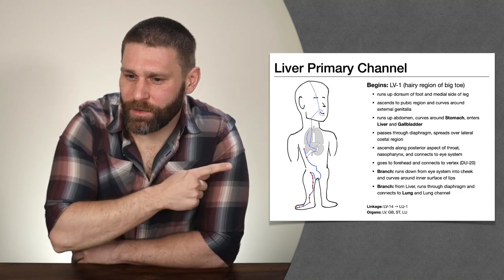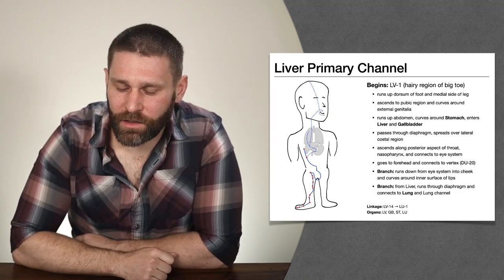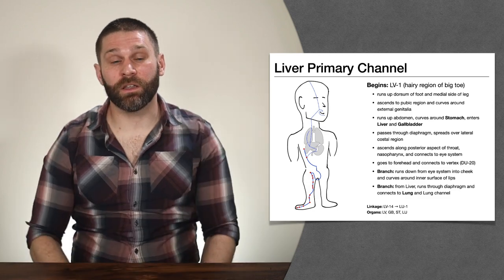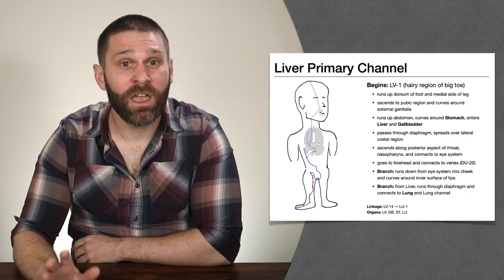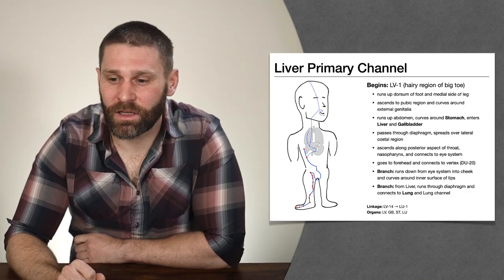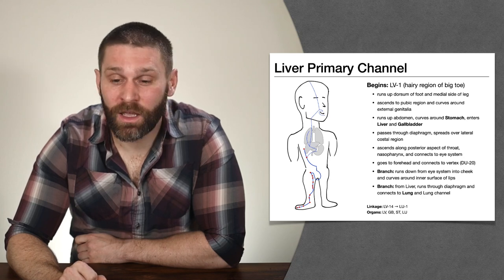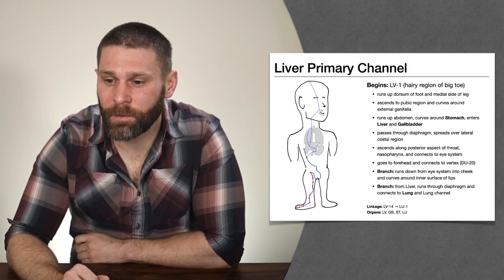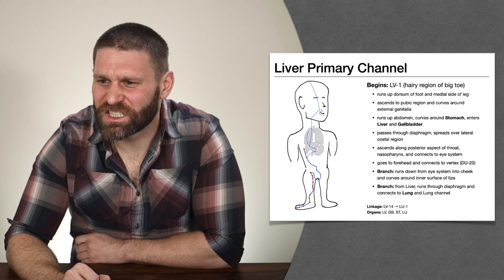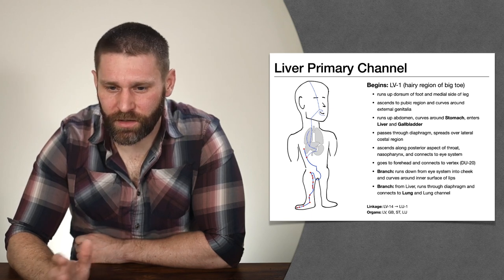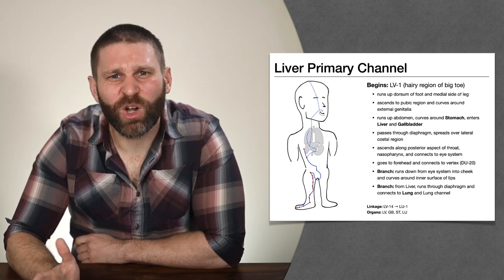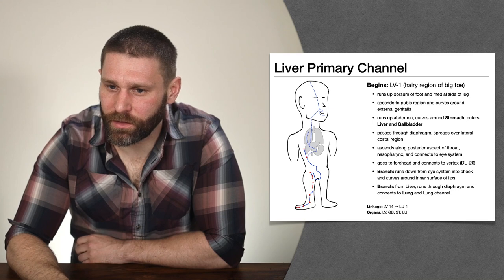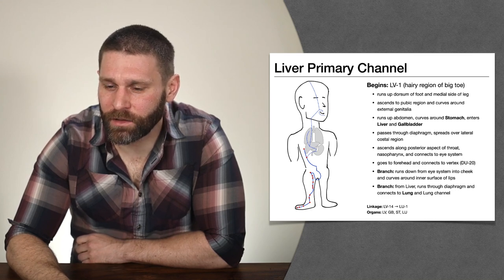Another thing we should mention is hernia and Shan disorder. Because the liver channel goes to the inguinal area, goes to the lower abdomen, and wraps around the genitals, we're going to see a lot of hernia pain — inguinal or abdominal hernia — and something we call Shan disorder, or mounting disorder, which is basically hernia-like pain due to cold in the liver channel.